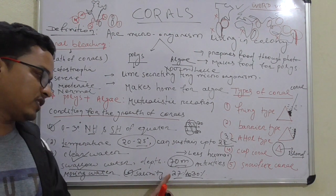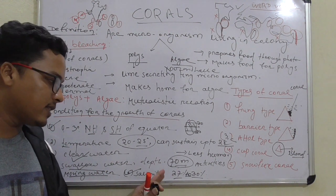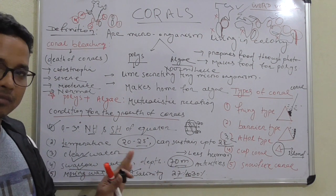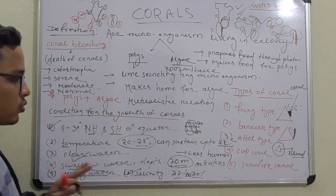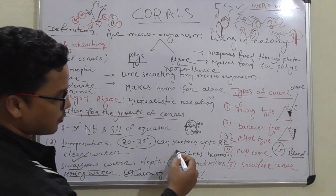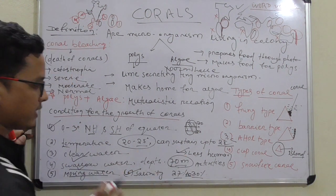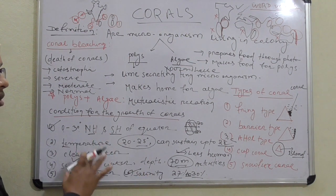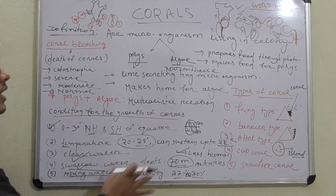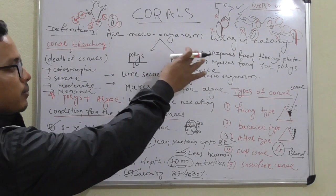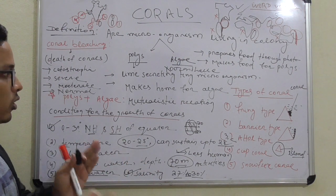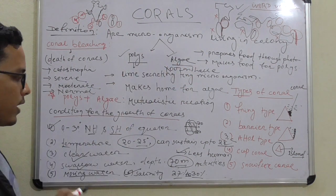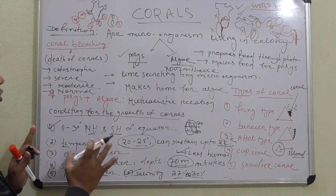If temperature increases, there would be death of corals. The last condition is less human activity. So these are the conditions required for the growth of corals — corals are microorganisms living in colony, consisting of polyps and algae.